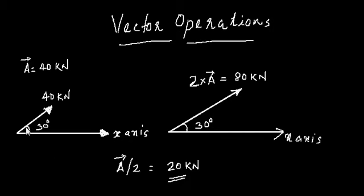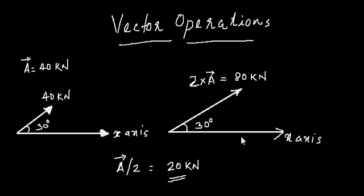Suppose you have a force vector of 40 kN making an angle of 30 degrees with the x-axis and you want to multiply this vector by a scalar — say 2. The multiplication simply gives 2 × 40 = 80 kN, and the direction remains the same: 30 degrees with the x-axis. If dividing by 2, you get 40 ÷ 2 = 20 kN, again at 30 degrees with the x-axis.